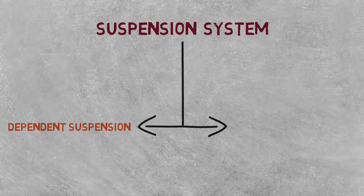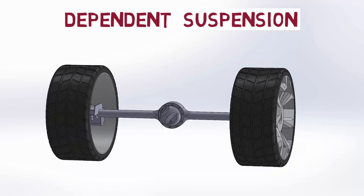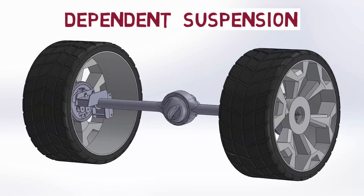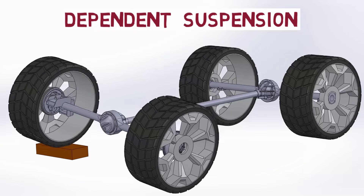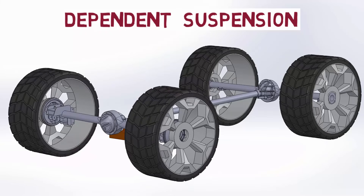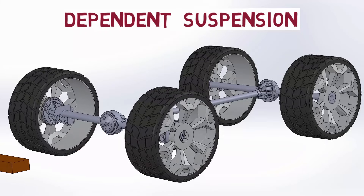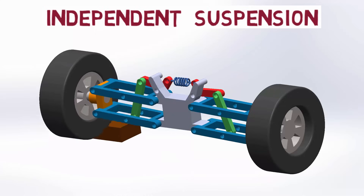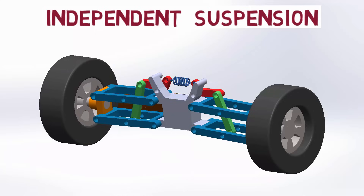A car's suspension may be dependent or independent. In a dependent suspension, there is a rigid linkage between the two tires. The force acting on one wheel will affect the other one as well. An independent suspension system allows both wheels to move vertically up and down independently.